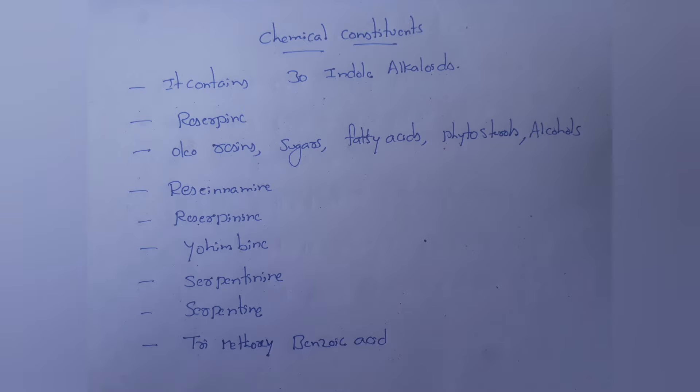Rauvolfia alkaloids are classified into five types: indole alkaloids, dihydroindole alkaloids, indoline alkaloids, indolenine alkaloids, oxyindole alkaloids, and pseudo-indoxyl alkaloids.